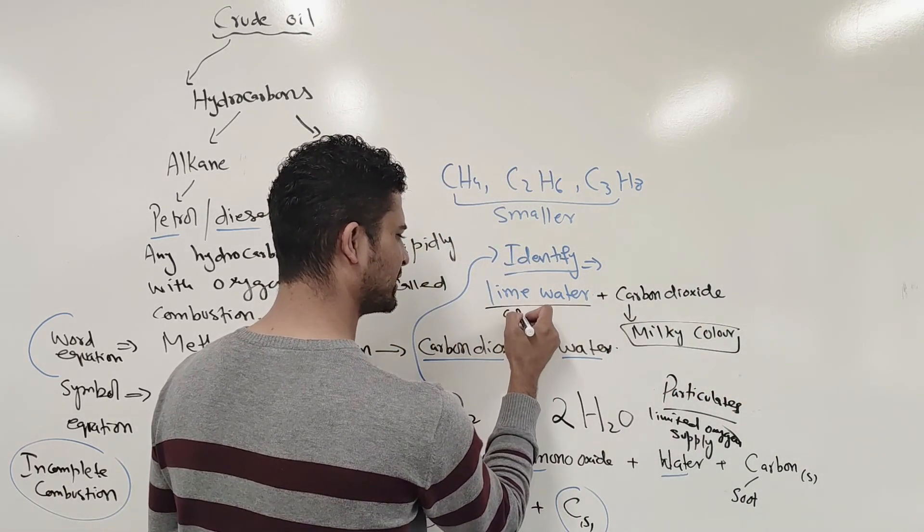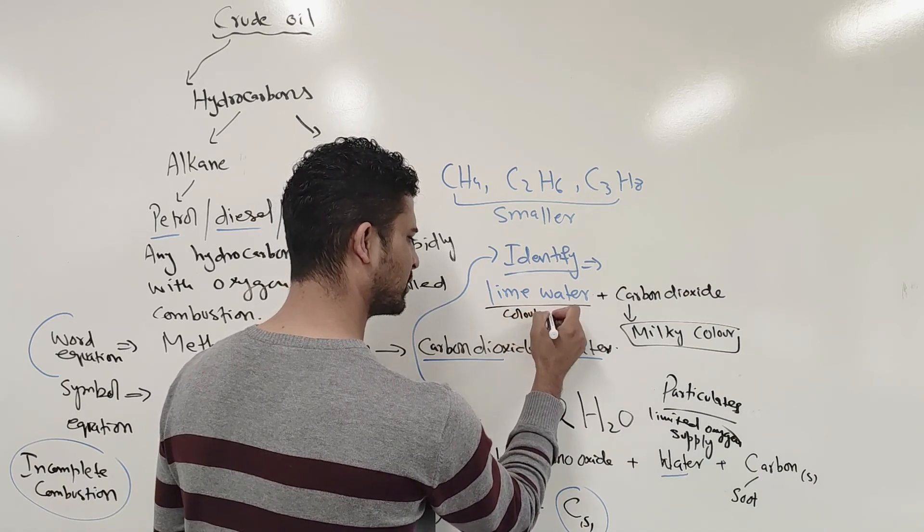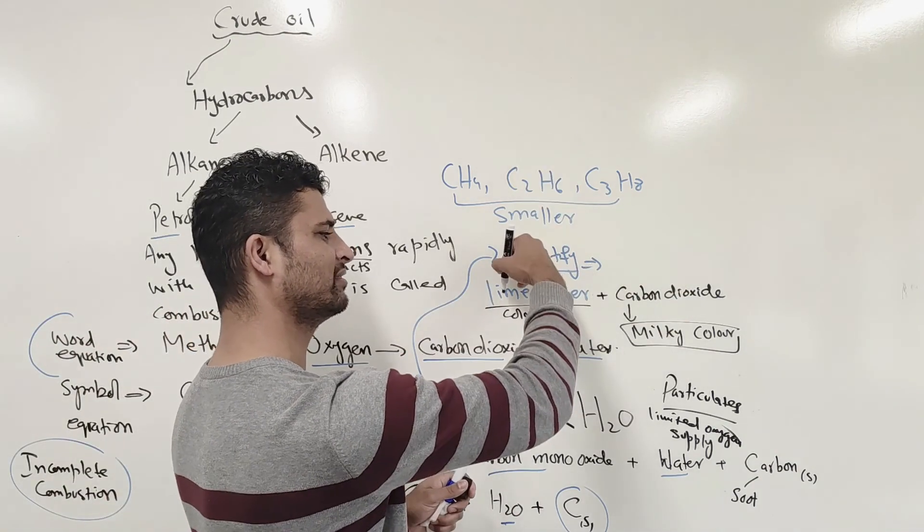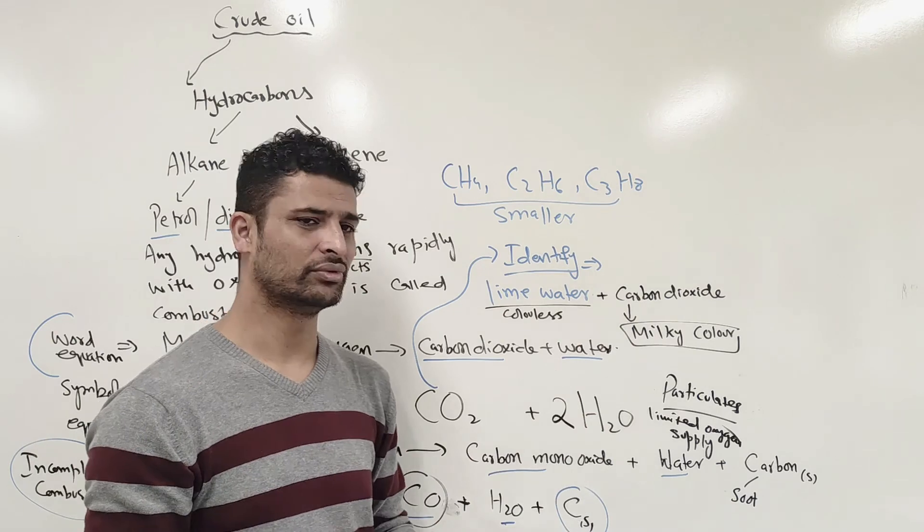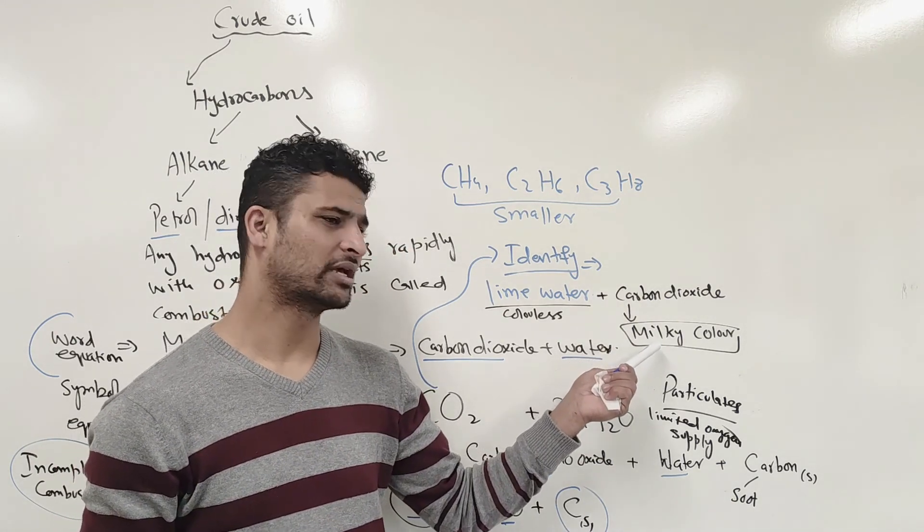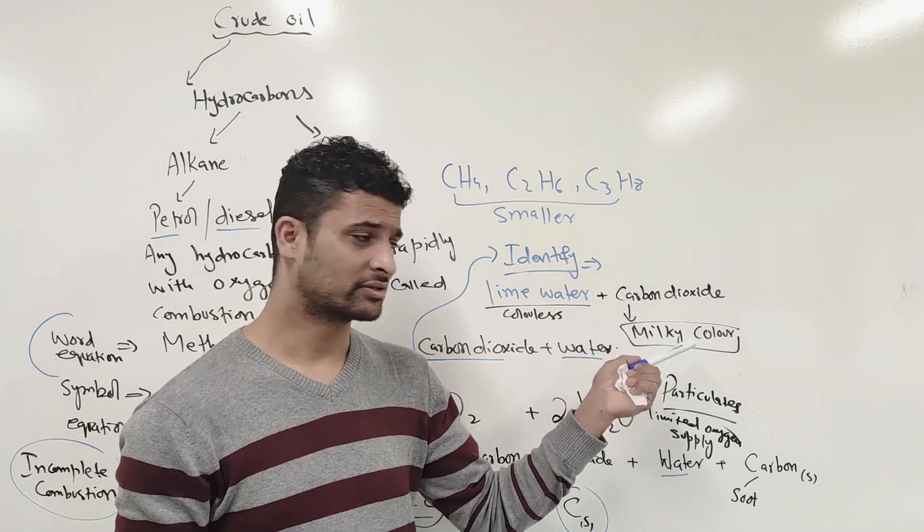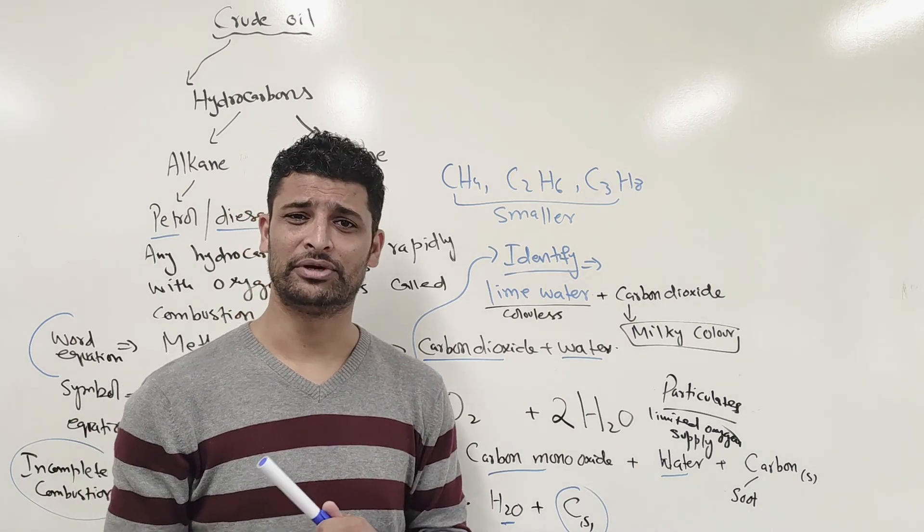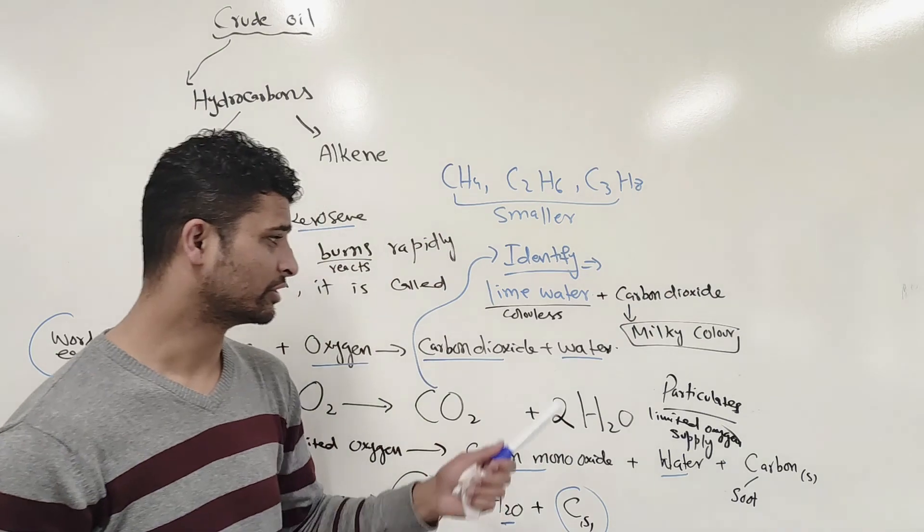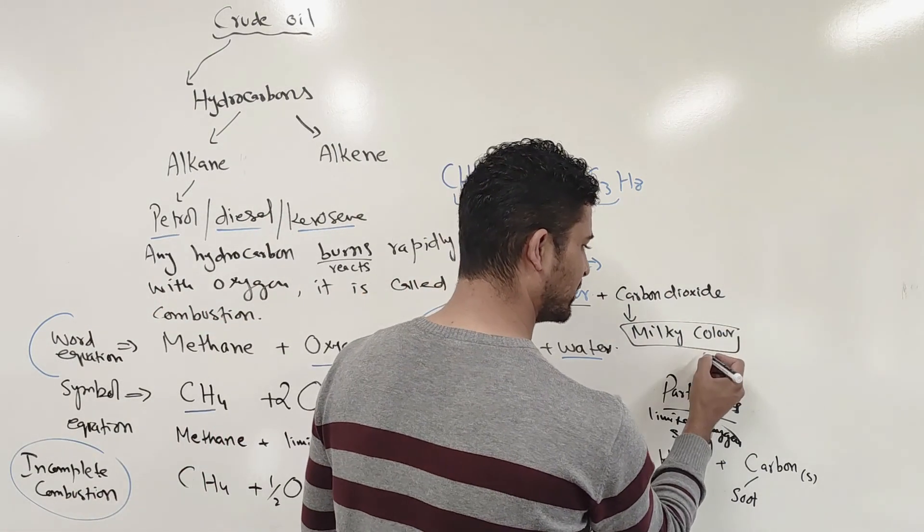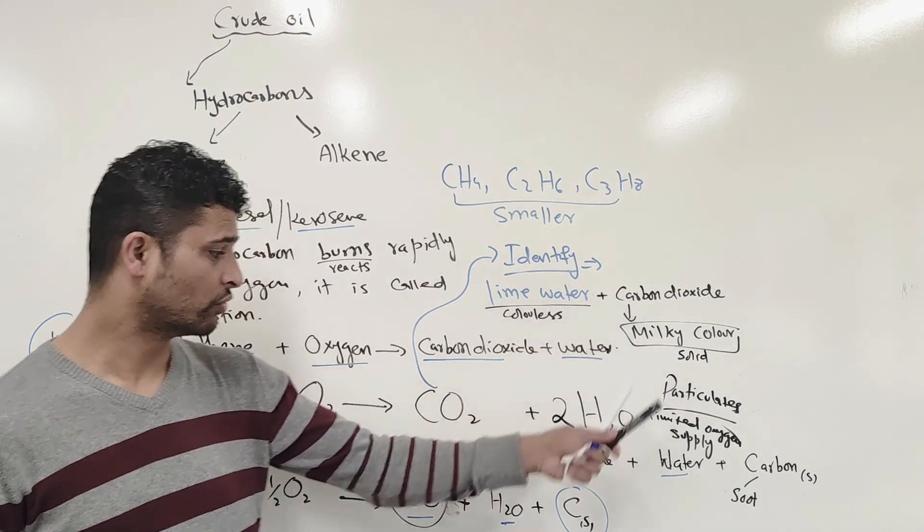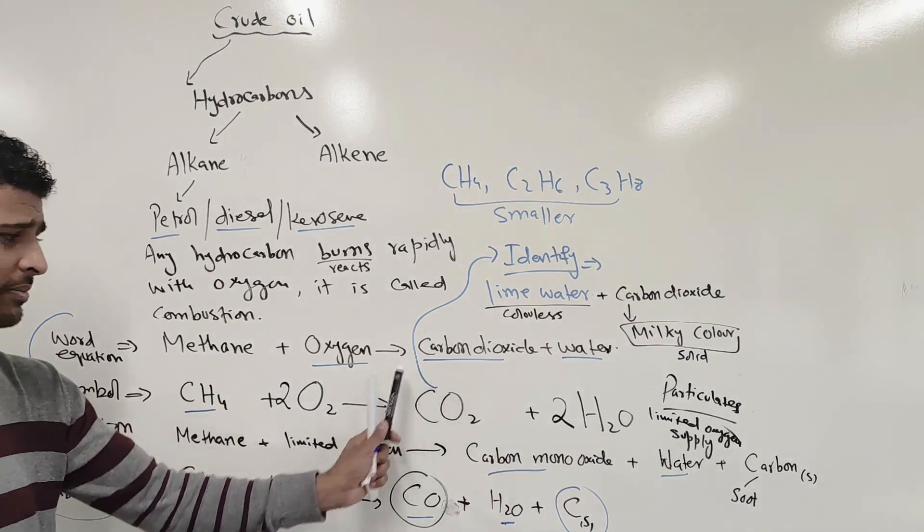Lime water is colourless. The moment you put that in there, it will turn the lime water milky. This is calcium hydroxide reacting with carbon dioxide to produce calcium carbonate. A solid will appear as a milky colour. That is evidence that your hydrocarbon is producing carbon dioxide.